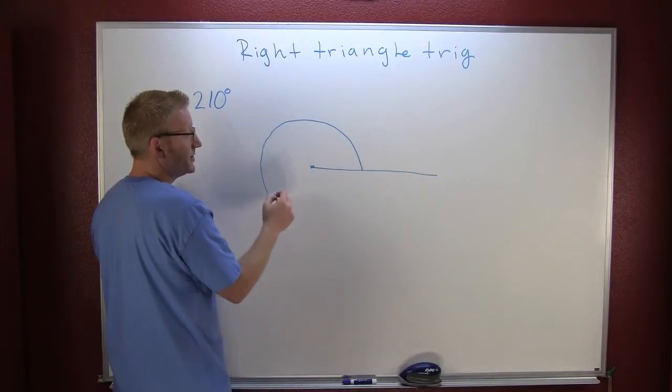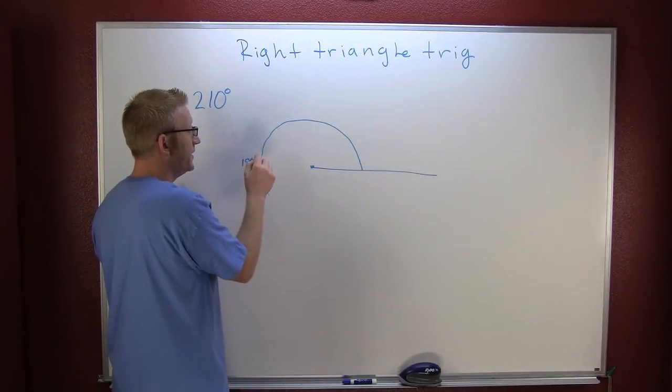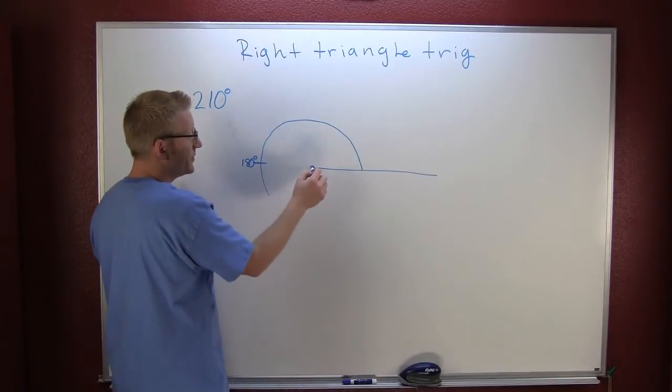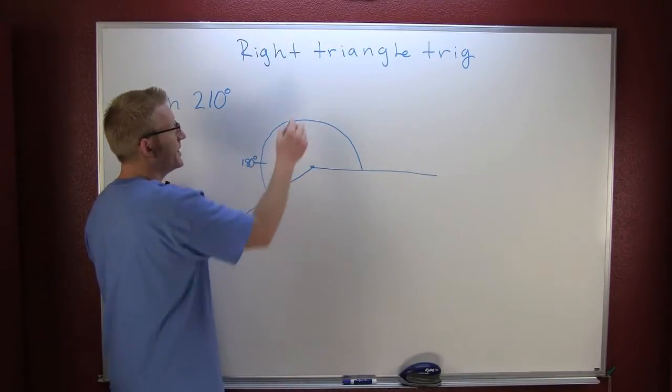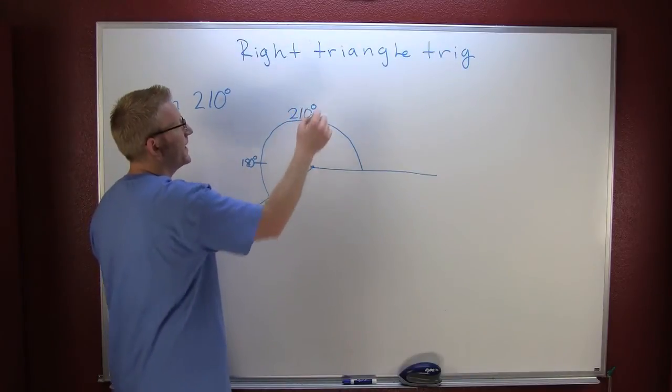You know that half a circle is 180 degrees. So you know the terminal side of that angle is 210 degrees. Excellent.